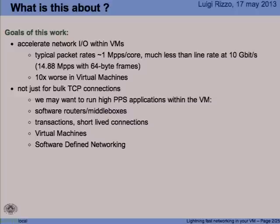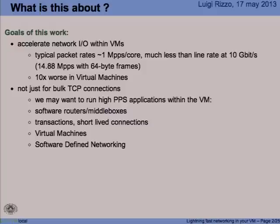We wanted to accelerate the network I/O not just for bulk TCP connections, because that's a relatively easier problem. We have large frames, TSO, hardware offloads that can relieve the work done on the CPU. So in a way, you can get close to line rate at 1 gigabit, and possibly even at 10 gigabits on a virtual machine, using more or less standard techniques and para-virtualized device drivers. However, there are more applications that might be interesting to run in virtual machines, such as software routers, middleboxes, applications that use short-lived connections. We would like to have the same level of performance on both real hardware and virtual machines.